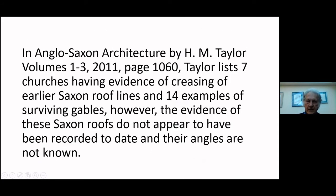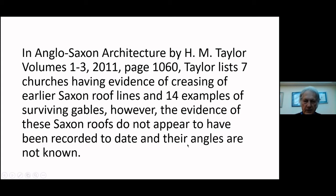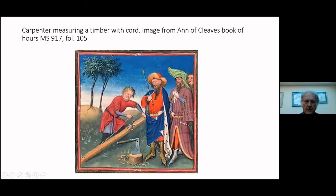In Anglo-Saxon Architecture published by Taylor, he recorded that there were 14 examples of surviving gables. However, the evidence of these Saxon roofs does not appear to have been recorded to date and their angles are not known, which makes it very difficult to further the research. Hopefully one day I'll come across a church with scaffolding up and be able to measure them. Here's an example of a medieval image showing a carpenter measuring a timber ready for cutting — beautifully illustrated.